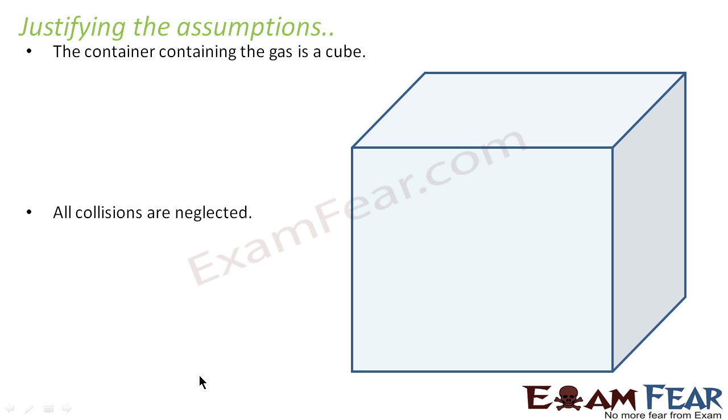The second assumption which we took was all collisions are neglected. Here, ignoring the collisions will not produce any wrong result or it will not produce any result which is something other than what we found. Because we saw that, what did we see in our derivation? We saw that the number of molecules hitting the wall in time delta t was found to be half nA vx into delta t.